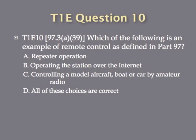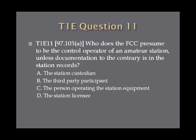Question 10: Which of the following is an example of remote control as defined in Part 97? A, repeater operation. B, operating the station over the internet. C, controlling a model aircraft, boat, or car by amateur radio. Or D, all of these choices are correct. Question 11: Who does the FCC presume to be the control operator of an amateur station unless documentation to the contrary is in the station records? A, the station custodian. B, the third party participant. C, the person operating the station equipment. Or D, the station licensee.